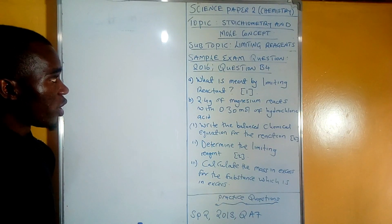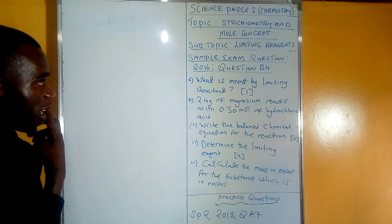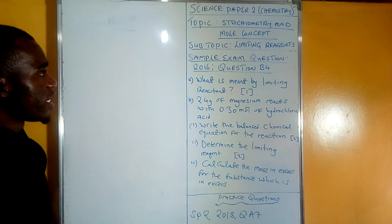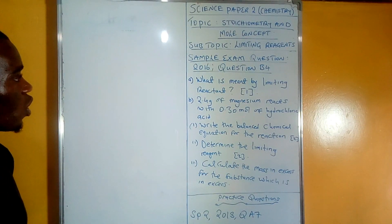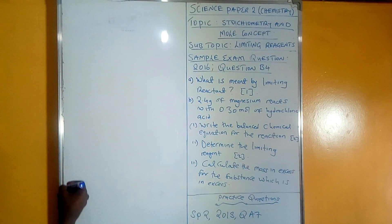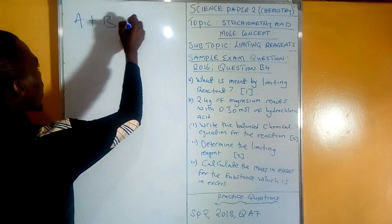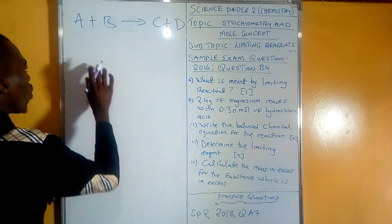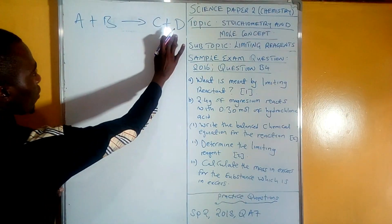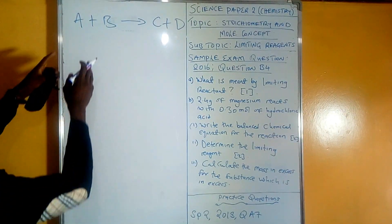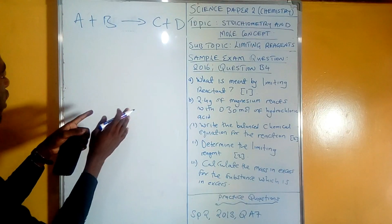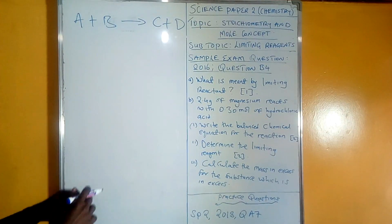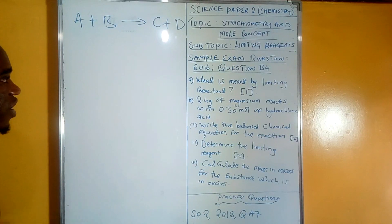The first question simply asks: what is meant by limiting reactant? To explain limiting reactants, we first give ourselves a quick refresh of chemical reactions. For every reaction, A + B produces C + D. We have the reactants and we have the products. The reactants are the things that react to produce what is supposed to be produced. Under this topic, limiting reagents, we are more interested in the reactants. By definition, a limiting reagent is simply a reagent that is in short supply by mole ratio.